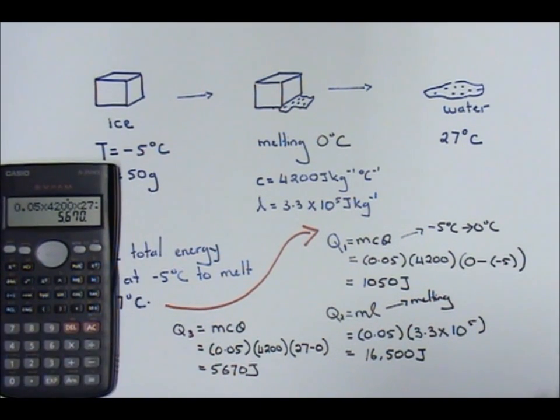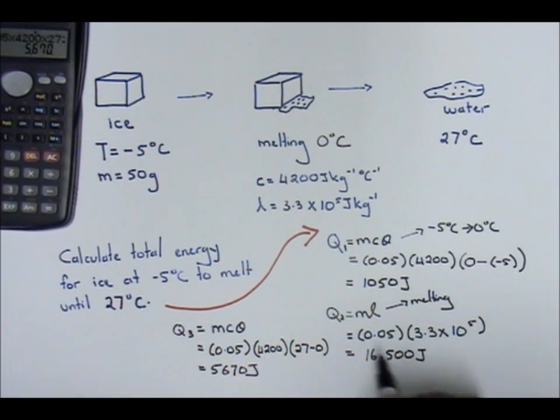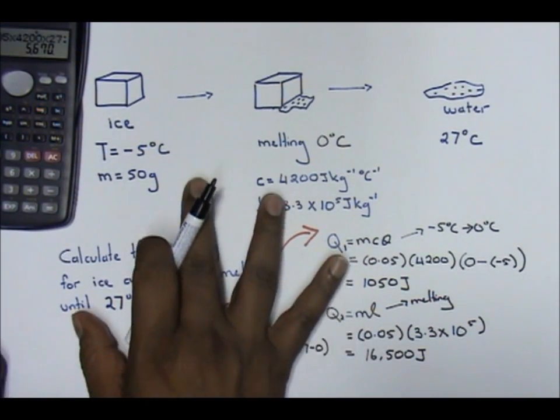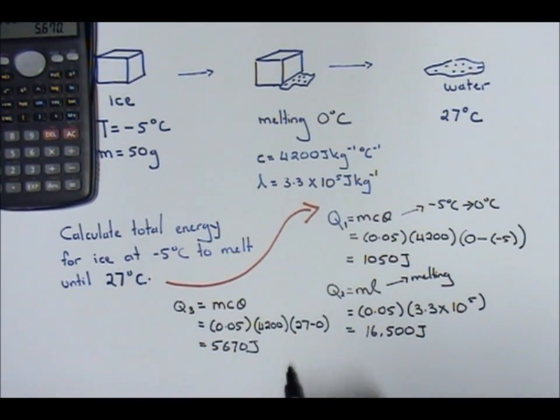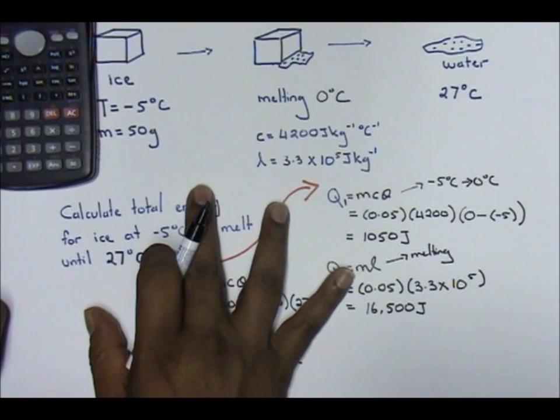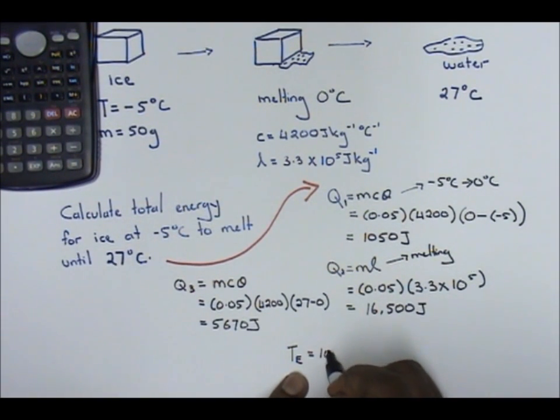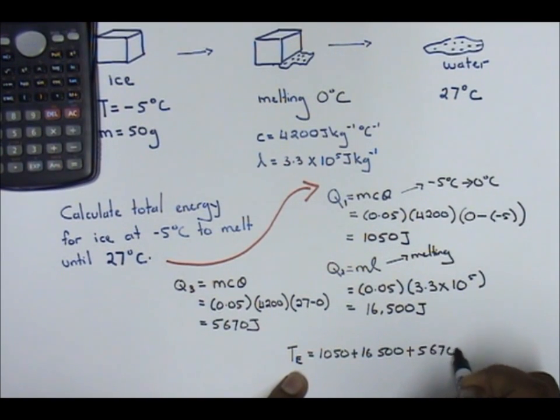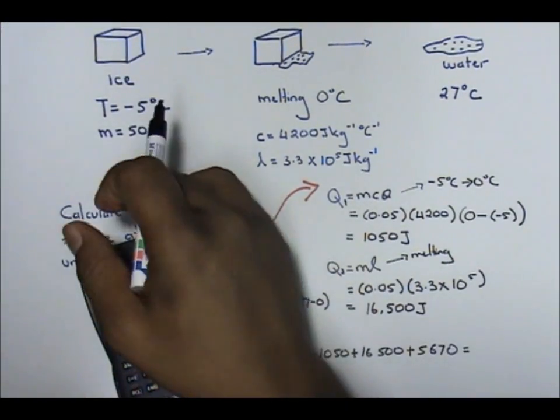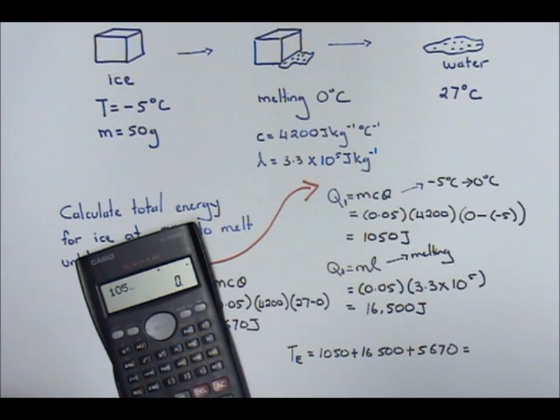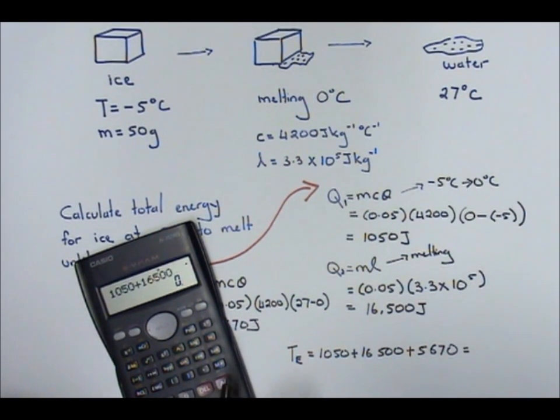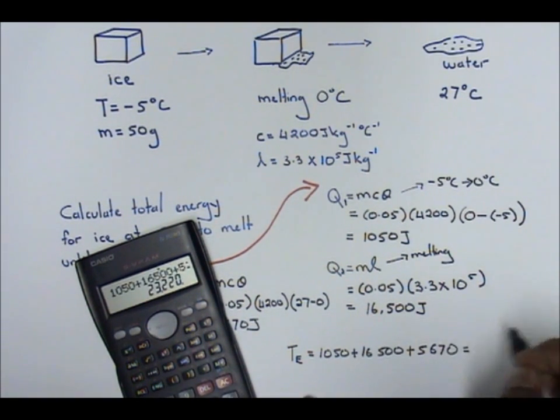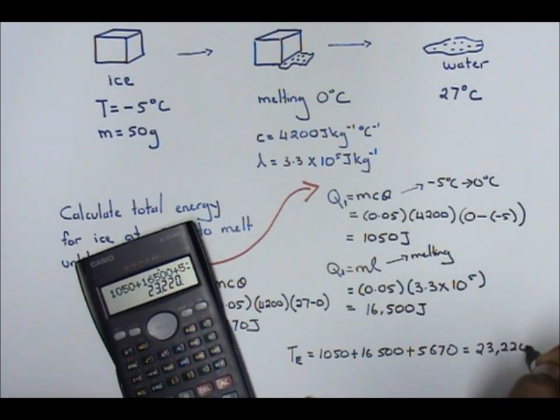Remember guys, the question is what is the total heat or total energy. The total energy equals to 1050 plus 16,500 plus 5670. You plus all of this, and the answer that you will obtain is the total energy needed to change from ice to water at that temperature. 1050 plus 16,500 plus 5670. You will get 23,220 Joules.